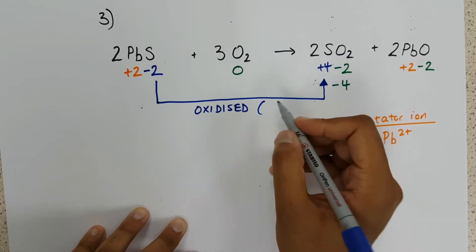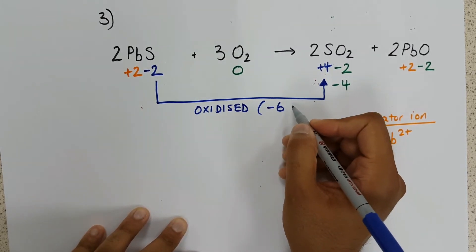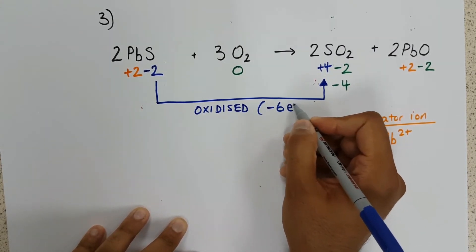And there's a difference of six electrons, so each sulphur has lost six electrons.